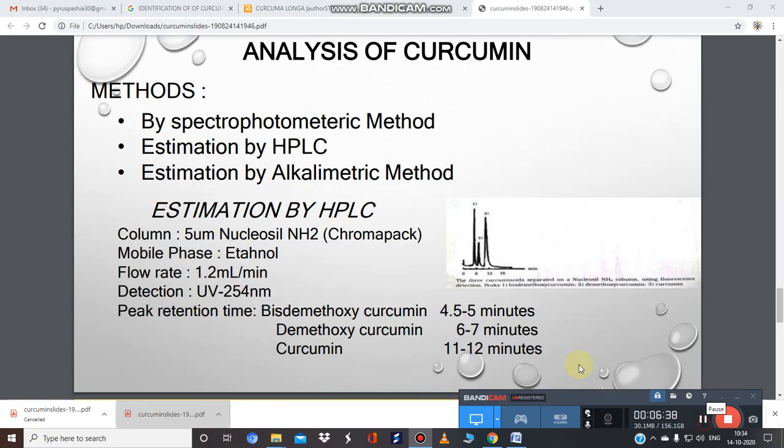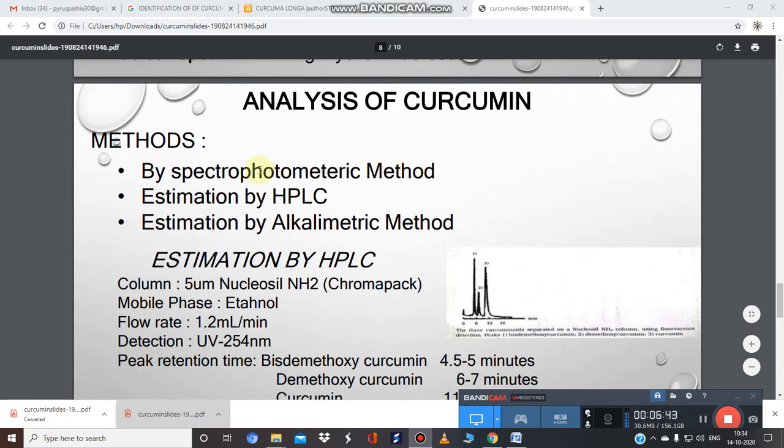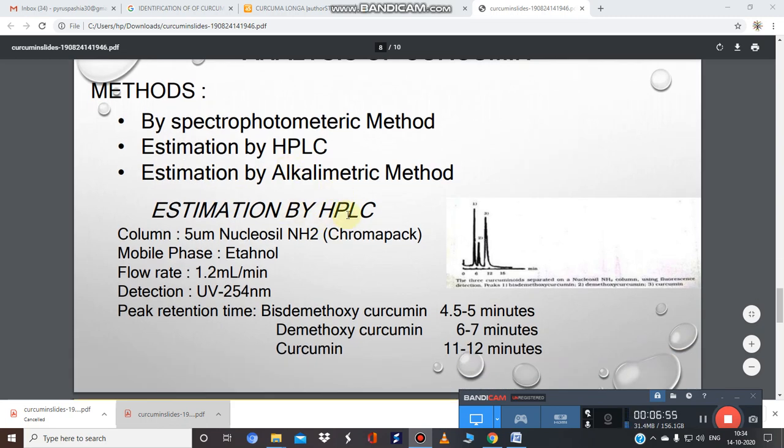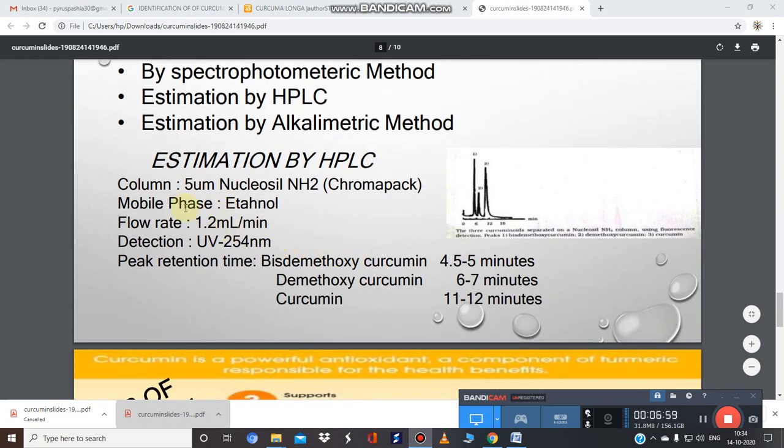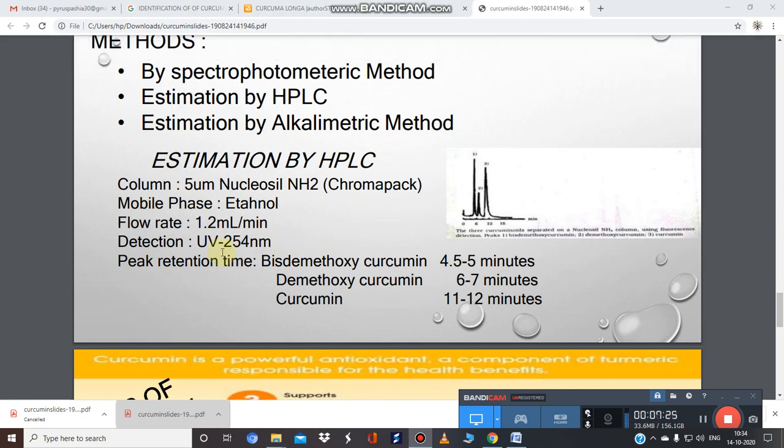Curcumin is also analyzed by spectroscopic and chromatographic methods. The HPLC method uses ethanol as mobile phase, a Nucleosyl NH2 column, flow rate at 1.2 ml per minute, and detection at UV 254 nanometer. Curcumin shows retention time of 11 to 12 minutes, as shown in the curcumin peak.